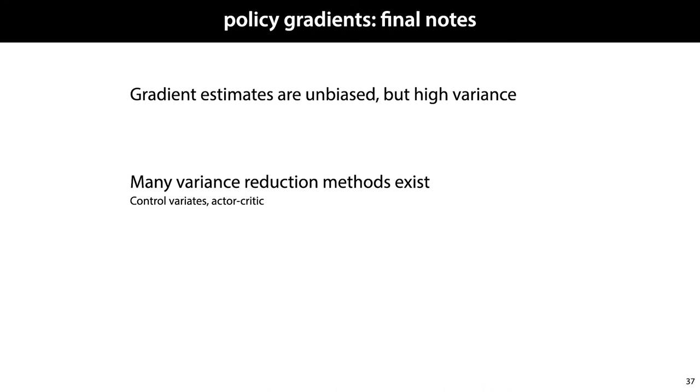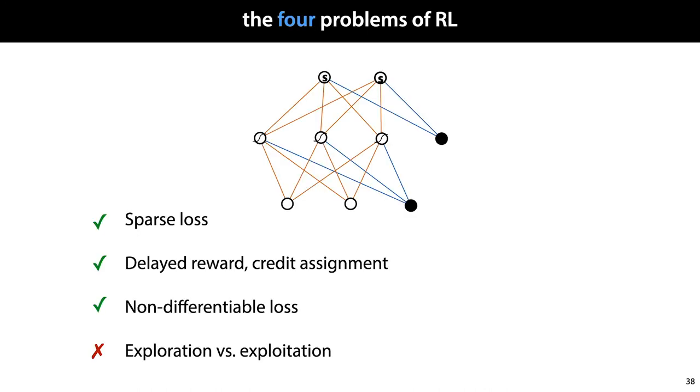So with that, we've seen two ways of attacking a reinforcement learning problem. Random search and policy gradients. Let's look back at our four problems of reinforcement learning and see which of them these solve, or solve at least in part. We have a solution to some extent for the sparse loss, the credit assignment, and the non-differentiable loss. We may need many episodes for the effects to average out properly, but in principle, it's the start of a solution to all of these three problems. It's important to note, however, that we haven't solved the exploration versus exploitation problem.